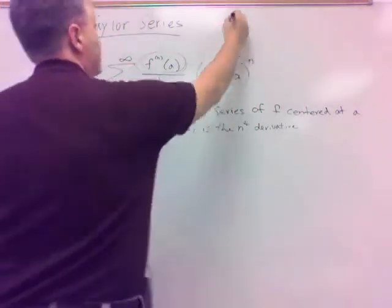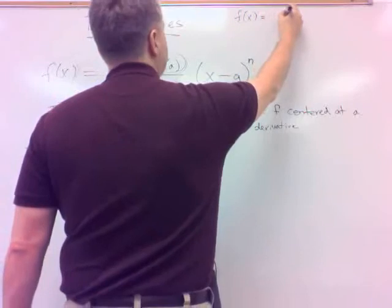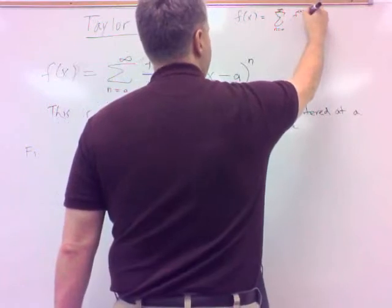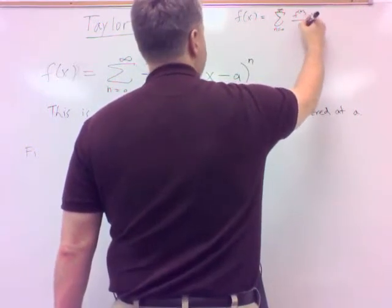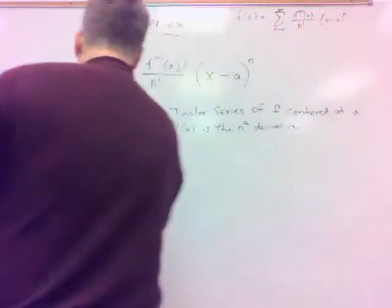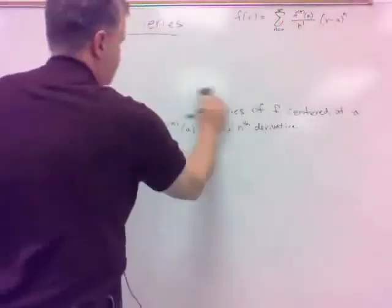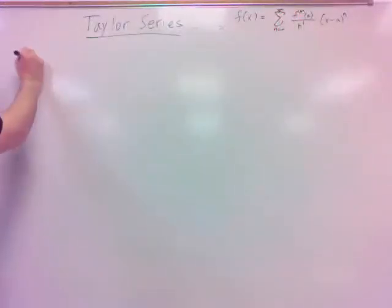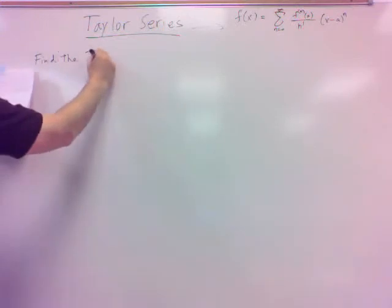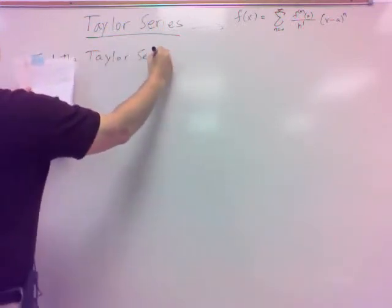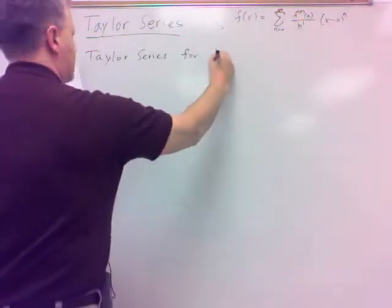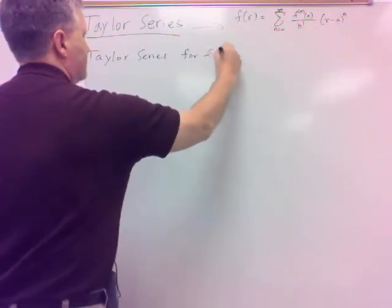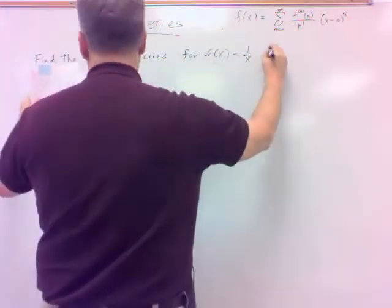So the Taylor series is: the sum from n equals zero to infinity of the nth derivative at a, over n factorial, times x minus a to the nth power. That's what a Taylor series would look like. So let's find the Taylor series for f of x equals 1 over x, centered at a equals 1.